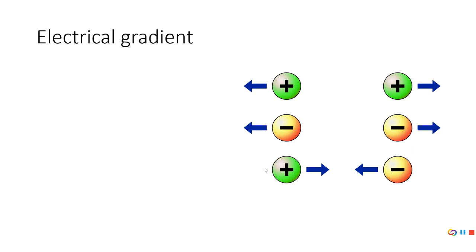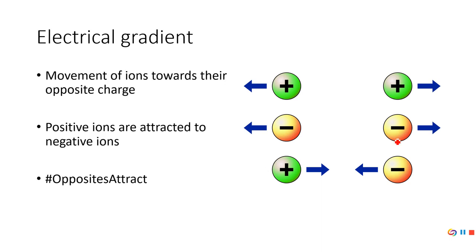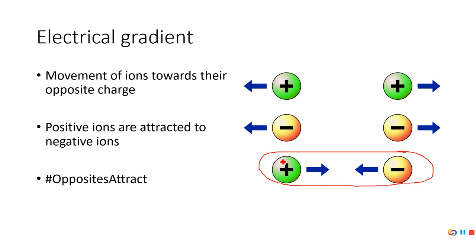There's also an electrical gradient. My seven-year-old son loves playing with magnets — two sides will stick together, and two sides will repel each other. When they stick, opposites attract. When they repel, you've got two positive or two negative sides together. As this relates to ions: positive ions like to hang with negative ions — think sodium and chloride — but positive ions don't get along with positive ions, and negative ions don't get along with negative ions. So sodium has both a concentration gradient and an electrical gradient.